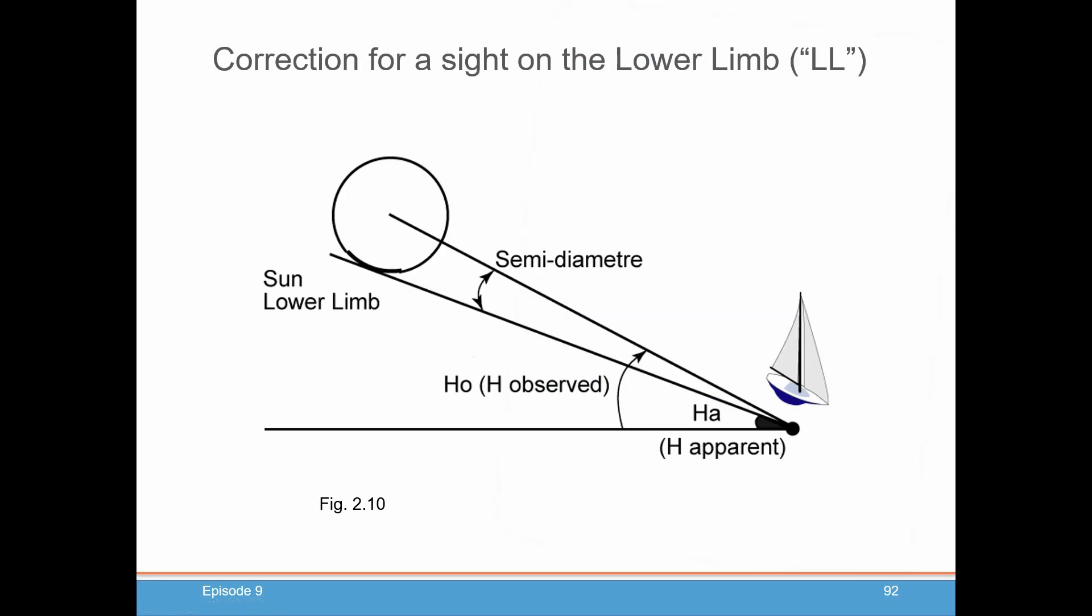So the first correction we want to talk about is the semi-diameter correction, and basically that has to do with being able to take into account the size of the celestial body that you're working with. And usually, this really only comes into play for the sun and the moon, because those are the only bodies that are large enough to show us a disk. Now, when we do celestial navigation, the calculations that we're going to be comparing against always are assuming that the angle is to the center of the body.